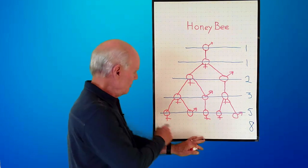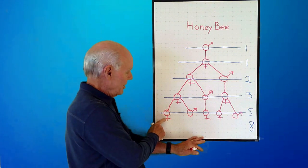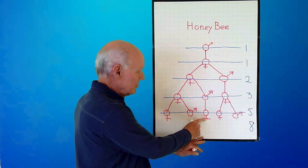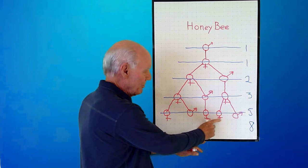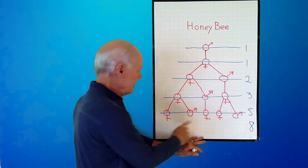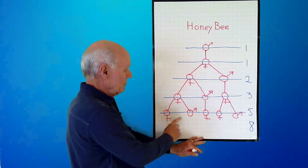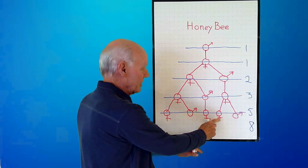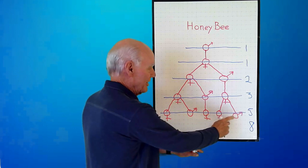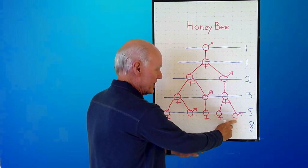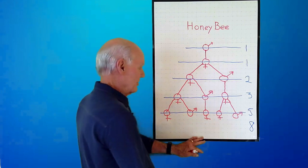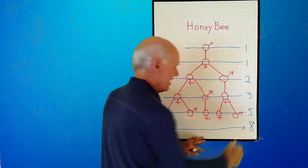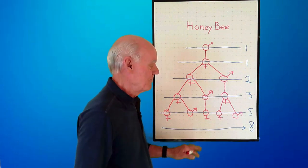Is that true? That female has two parents, one parent, two parents, two parents, one parent. Two plus one is three, plus two is five, plus two is seven, plus one is eight. So yes, that generation will have exactly eight bees.